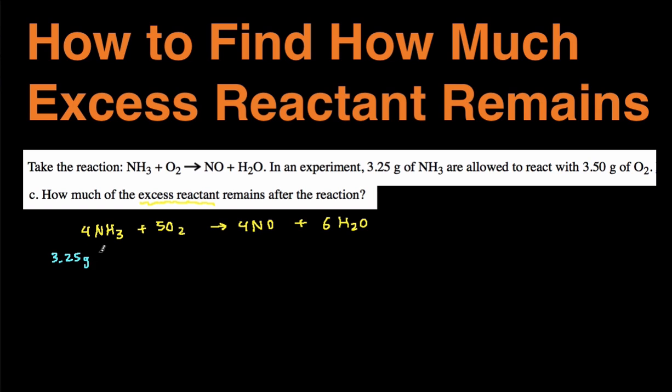So I have 3.25 grams of NH3 and to convert into moles I divide by the molar mass. So dividing by the molar mass of NH3 which is 17.031, and that gives me 0.19 moles of NH3. I do the same thing for O2. I have 3.5 grams O2 divided by its molar mass, which is roughly about 32. And then that gives me 0.109 moles of O2.